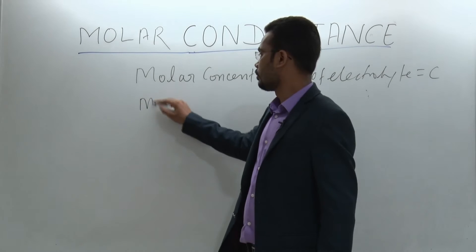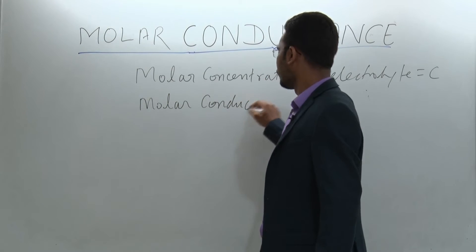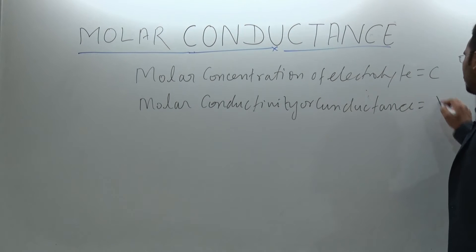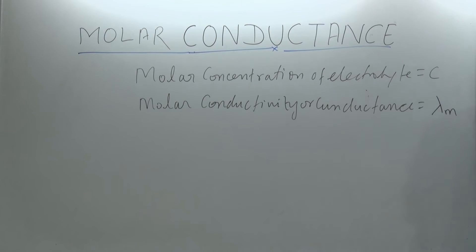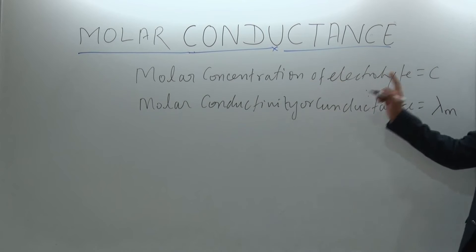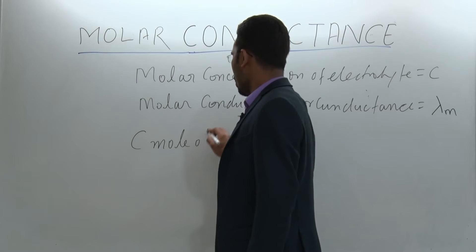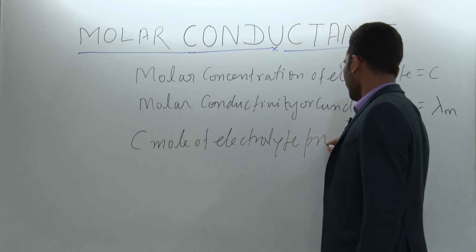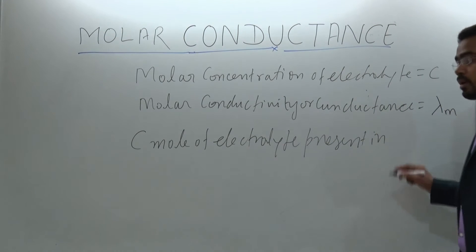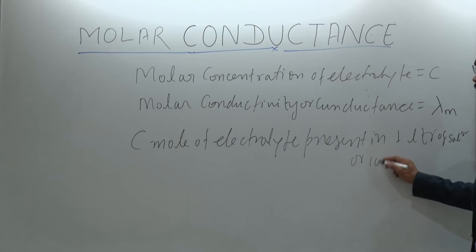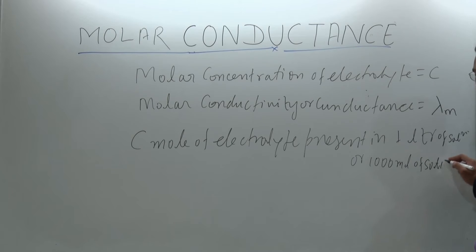Molar conductivity or conductance is lambda m — lambda m — of the electrolyte. As we know that if concentration of electrolyte is C, it means C moles of electrolyte are present in 1 liter, or you can say 1000 ml of solution.